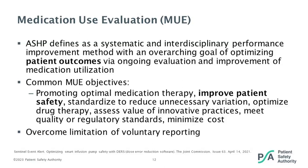There are seven common MUE objectives listed here, which may be undertaken to reach these goals. They range from optimizing therapy — such as determining the time in therapeutic range for a medication requiring pharmacokinetic monitoring — or minimizing costs when there are multiple therapeutic options to treat a condition. The objective we are focusing on is improving medication safety. For an MUE, the team would analyze all instances when a medication is used for the defined patient population and time period. This overcomes limitations of voluntary reporting to give a more broad picture of medication use.